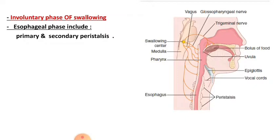In some pathological conditions, failure of this sphincter to undergo receptive relaxation causes a condition called achalasia. Achalasia means failure of the lower esophageal sphincter to relax. It remains tonically constricted, and over time there is progressive dilatation of the esophagus.